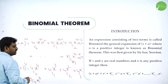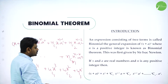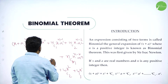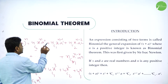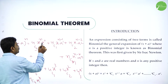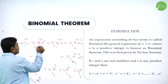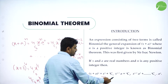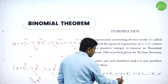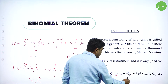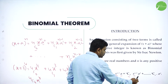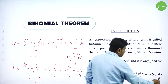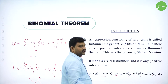So this is the binomial expansion. Here nC0 is 1, so we don't write it. Anything power 0 is also 1, so we don't write those either. The expansion simplifies to: x power n, plus nC1 x power n minus 1 times a, plus nC2 x power n minus 2 times a square, and so on up to a power n.